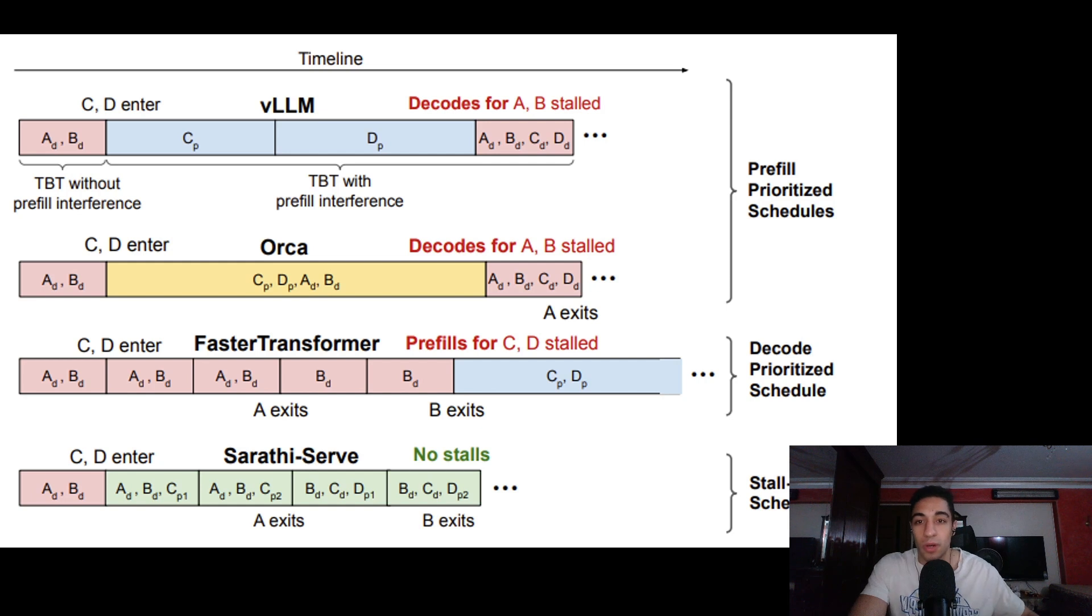Another optimization is called stall-free scheduling or prefill chunking. The idea here is B stands for prefill and D stands for decode. If you chunk your prefill into smaller chunks, you can add it to the decode phase. By doing this, you can do both at the same time, so you save time.